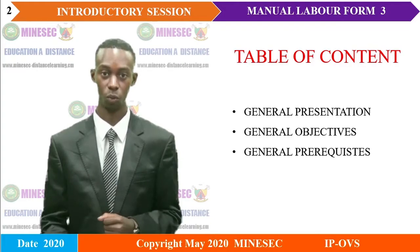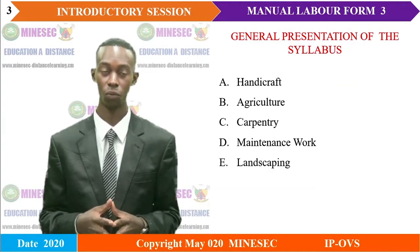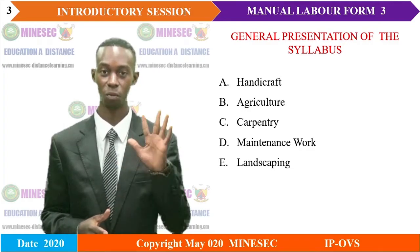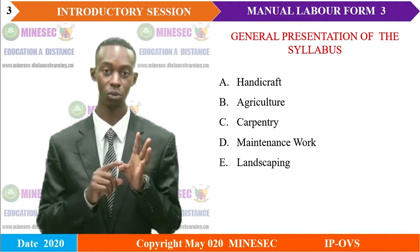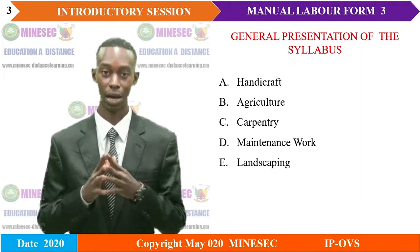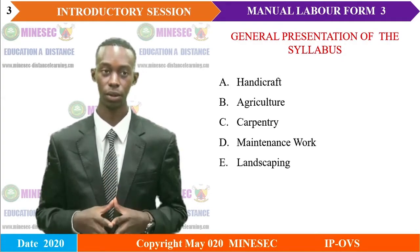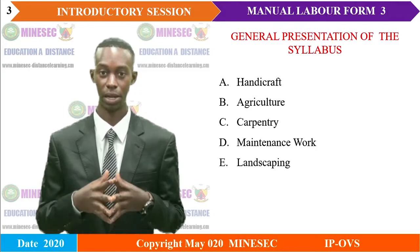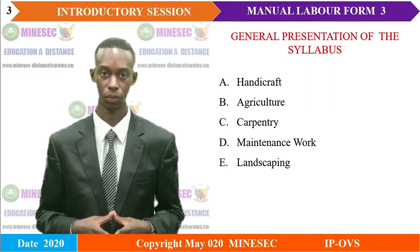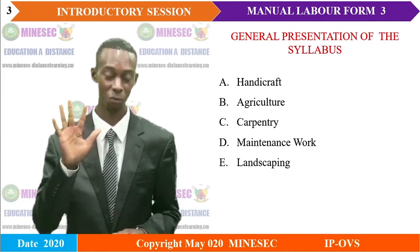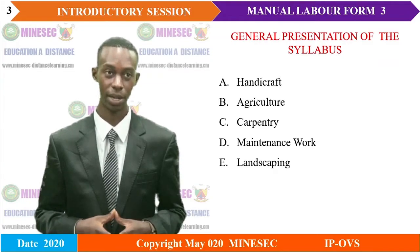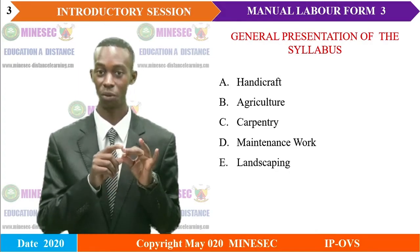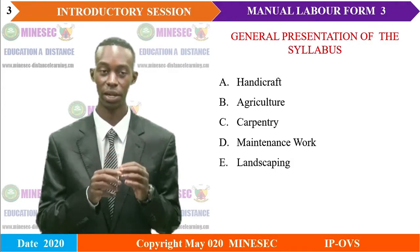The Manual Labour program is made up of five modules. The first module is Handicraft, followed by Agriculture. The third module is Carpentry, followed by Maintenance Work, and finally the last module is Landscaping. So to summarize, we have five modules: Handicraft, Agriculture, Carpentry, Maintenance Work, and Landscaping.